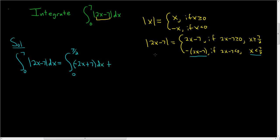Plus, from 7/2 to 7, where x is bigger than 7/2, we use 2x minus 7. So the second integral is the integral from 7/2 to 7 of (2x minus 7) dx. And here's where it gets kind of messy.